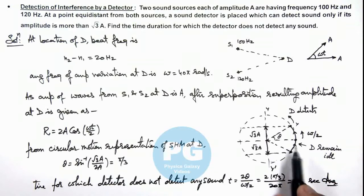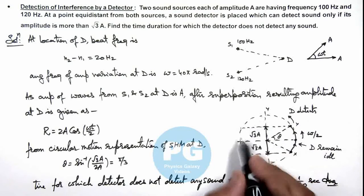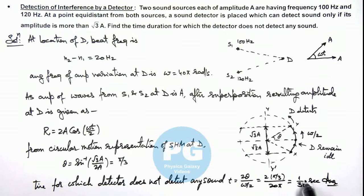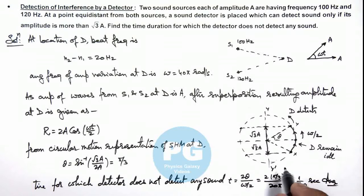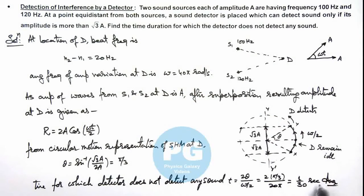When the oscillating particle on the circle moves from X to Y it will take 1/30 second, during which the detector remains idle. Then it will detect sound again, and when it moves from this point back to the other point, for 1/30 second the detector will remain idle again. In total, in one full cycle, the time for which the detector remains idle will be twice this value, but the duration for which it does not detect sound in each instance is 1/30 second, which is the result of this problem.